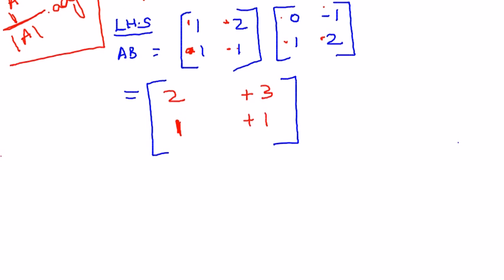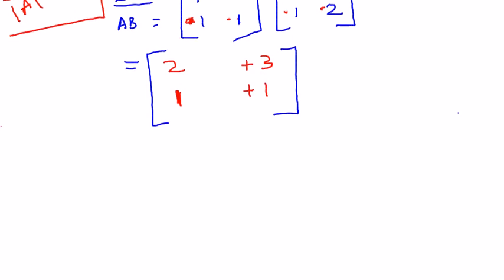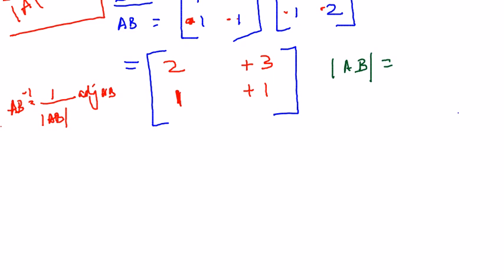Now to find AB inverse, the formula is 1 by mod AB into adjoint of AB. Shall we find mod AB? Mod of AB is this into this minus this into this, so 2 minus 3, which is minus 1. Since mod AB is not 0, we can proceed to find AB inverse.